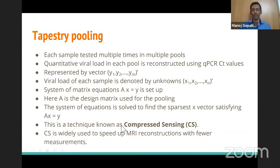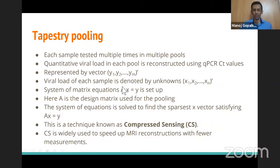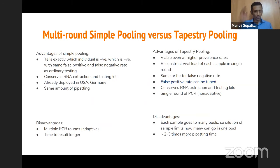This is the classic compressed sensing / sparse regression framework familiar from signal processing, using L1-norm minimization (minimizing ||Ax − y||₁) which promotes sparse solutions. However, tapestry pooling differs from classical compressed sensing in key ways: A must be a 0-1 matrix, and the noise model is multiplicative (not additive) based on how PCR works. Three main challenges drive the team's contributions: designing the noise model, designing the A matrix, and developing the recovery algorithm.